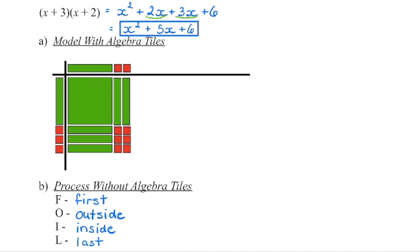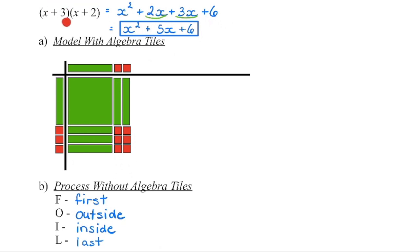The process we can use to make sure we remember to multiply every term by every other term is FOIL — it's an acronym. F stands for the first term: multiply the first term in one binomial by the first term in the other. O stands for the outside term — if you think of this as a house, these two terms are on the outside wall. I stands for the inside term — these are the inside walls, nice and cozy. And L is the last term in each bracket. Going first, outside, inside, last ensures every term is multiplied by every other term.